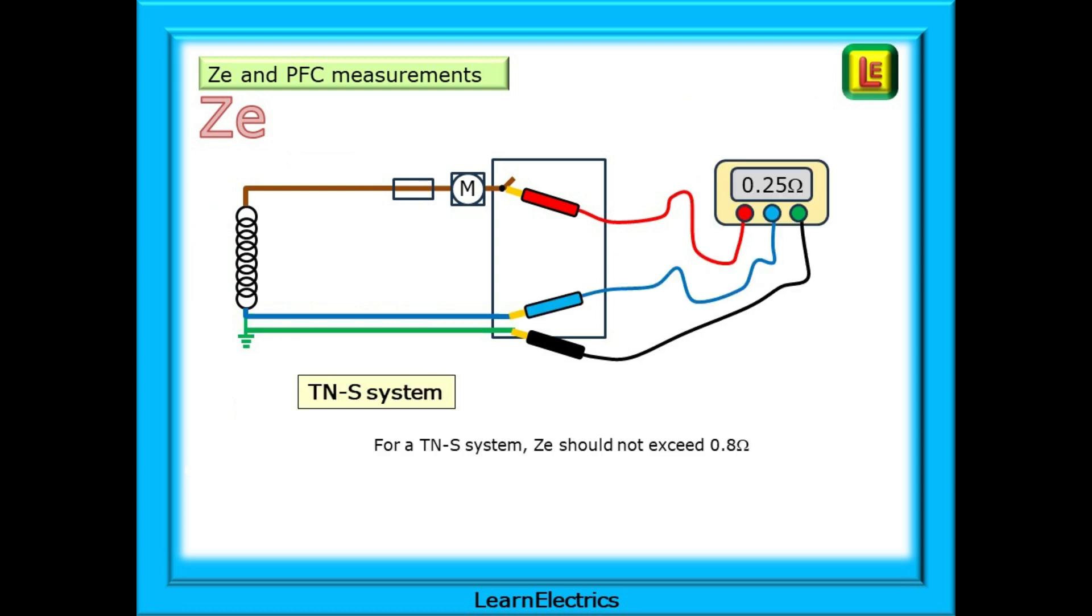With a TNS system the testing is exactly the same. Whether you use a two wire test or a three wire test is between you and your meter. For TNS systems we are looking for a ZE that does not exceed 0.8 ohms. The type of cable used in TNS systems is different to TNCS. It is older technology and has a slightly higher resistance reading.